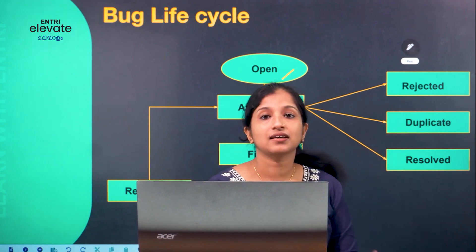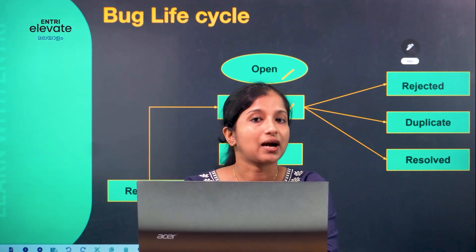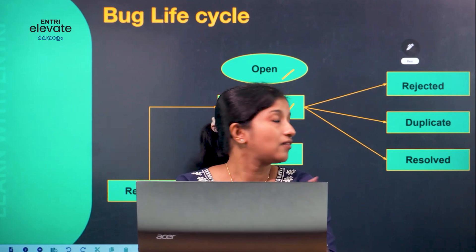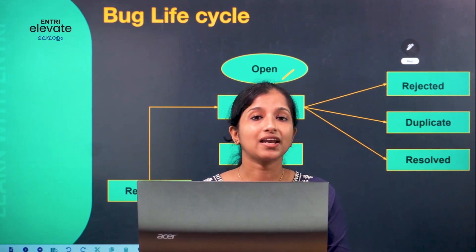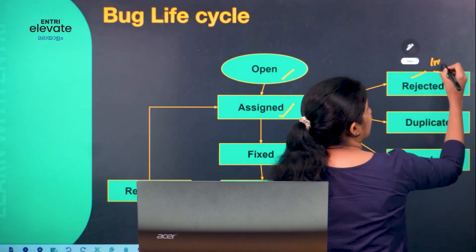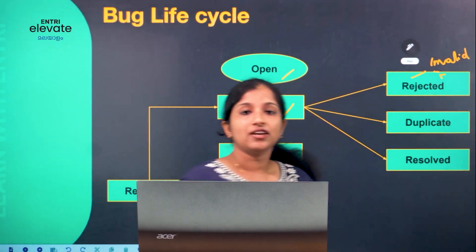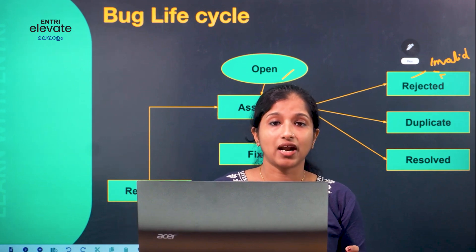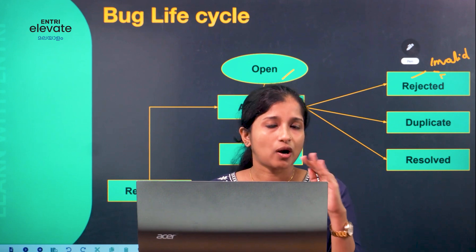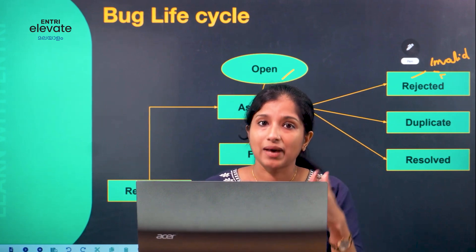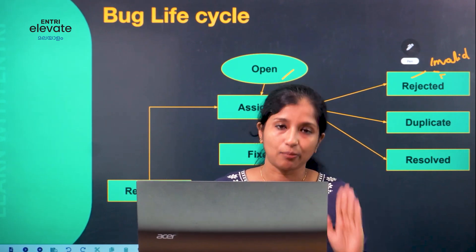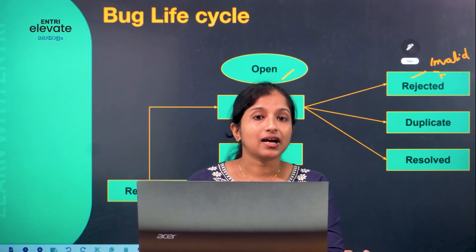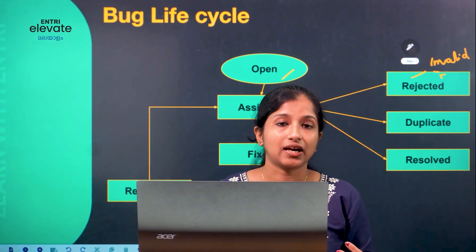One developer option is rejected — meaning the reported issue is not actually a bug but a feature or an intentional addition. This is an invalid bug. It may be a case where the tester reported something that doesn't match the expected requirement, leading to doubt about whether the report is valid or invalid.